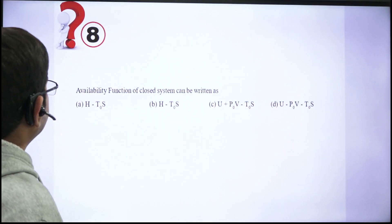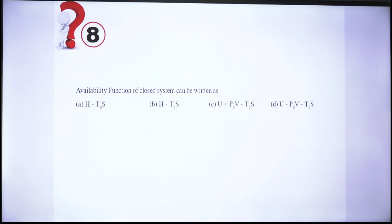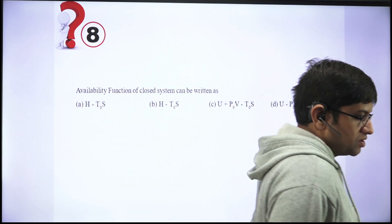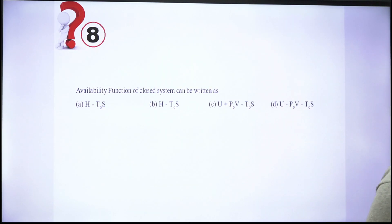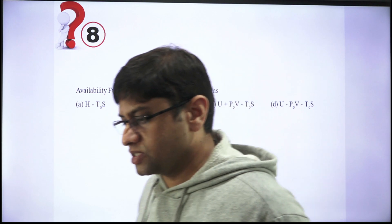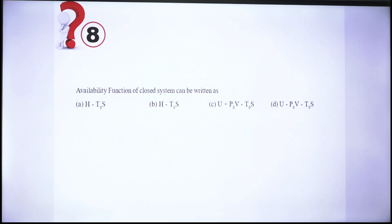Question 8: The availability function of a closed system can be written as what? Four choices are given and you have to identify which expression represents the availability function of the closed system. There is an availability function for the closed system and one for the open system — you have to identify which expression belongs to the closed system.